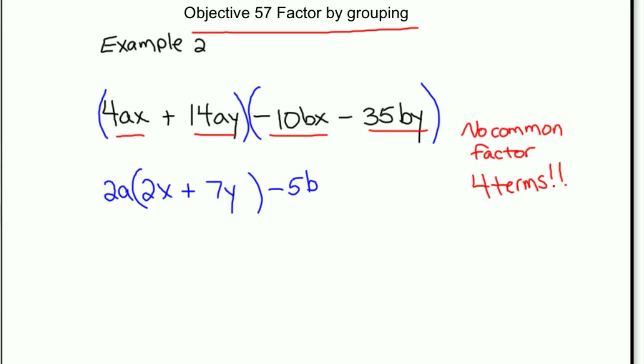Now, they also have a b in common, so I'm going to factor that out as well. After I factor out a negative 5b, I'll be left with a 2x and then a positive 7y.